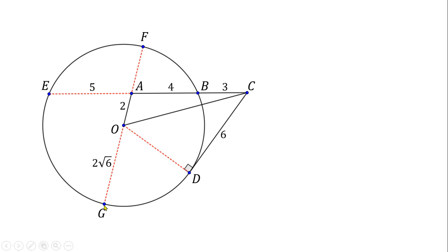Now, we know that GO is 2 square root of 6. Take note that OD is also a radius of the circle, and so OD must also be equal to 2 square root of 6.